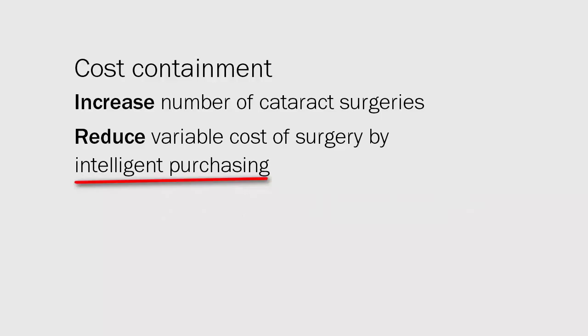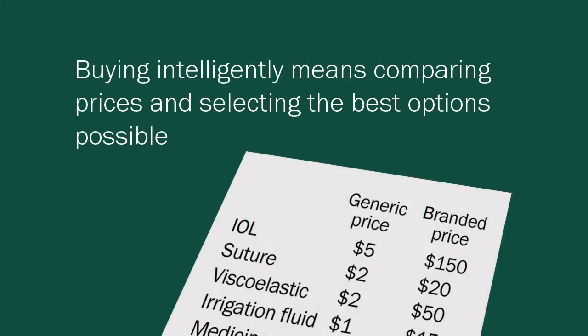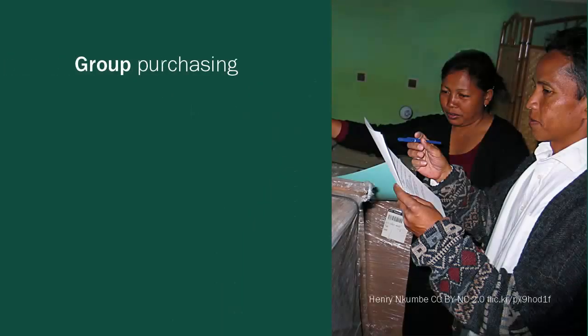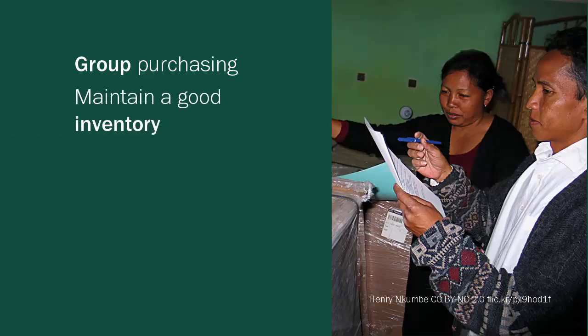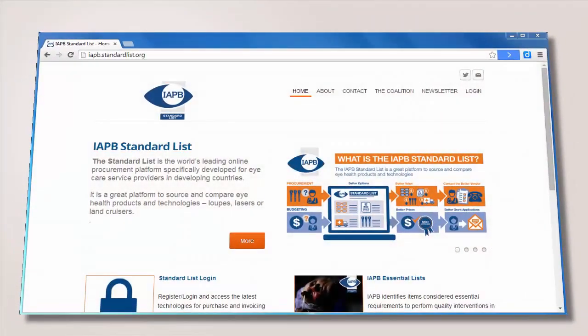Cost containment is achieved in two ways: firstly, by increasing the number of cataract surgeries carried out; and secondly, by reducing the variable component of the cost of surgery through intelligent purchasing. This means negotiating bulk prices for consumables, sourcing cheaper generic drugs and IOLs, or even using effective low-cost technologies. These are decisions that can be managed by lobbying with management.